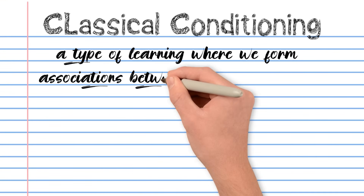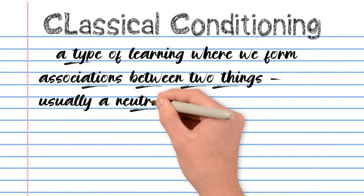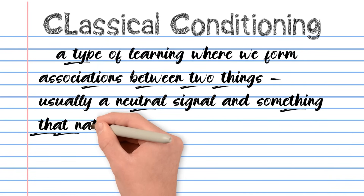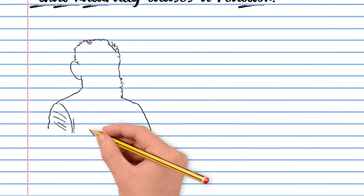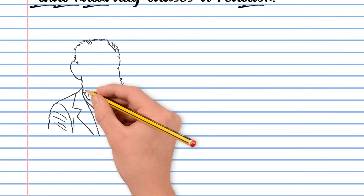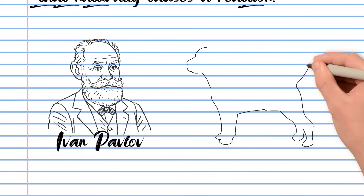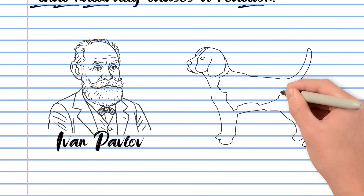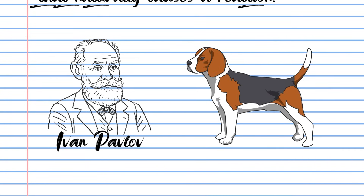Classical conditioning is a type of learning where we form associations between two things — usually a neutral signal and something that naturally causes a reaction. It was first described by Russian physiologist Ivan Pavlov in the early 1900s, and yes, it all started with dogs.